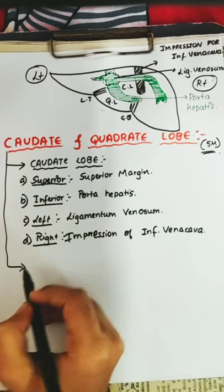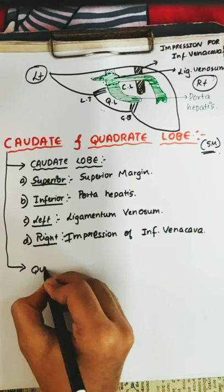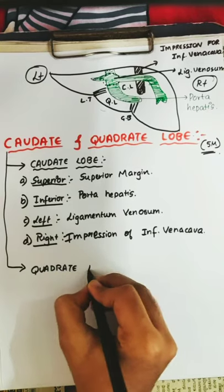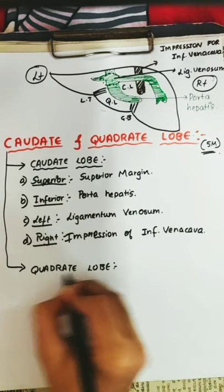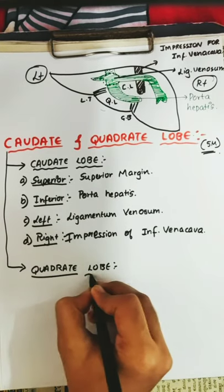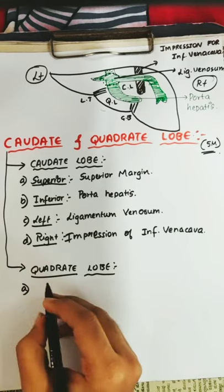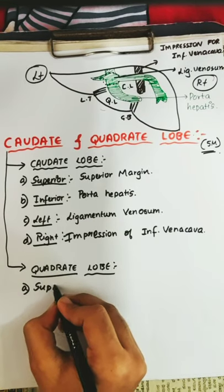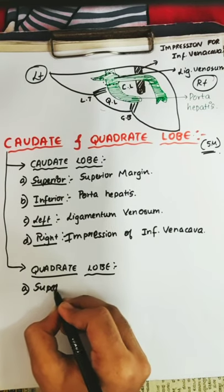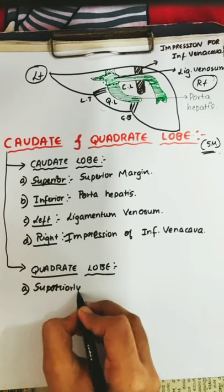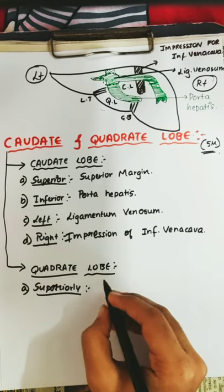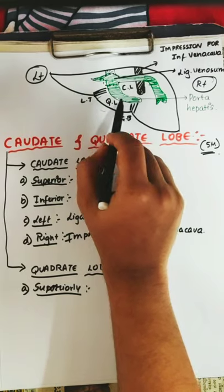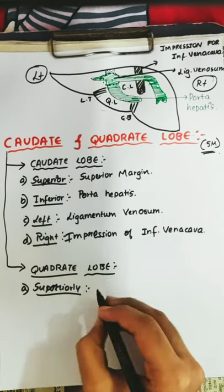Now we will see the other lobe, that is the quadrate lobe. If we see the boundaries of the quadrate lobe — superiorly, if this is the quadrate lobe, superiorly we will be seeing the porta hepatis.